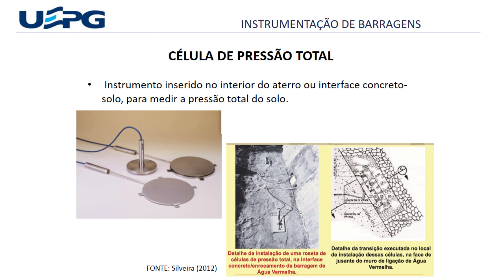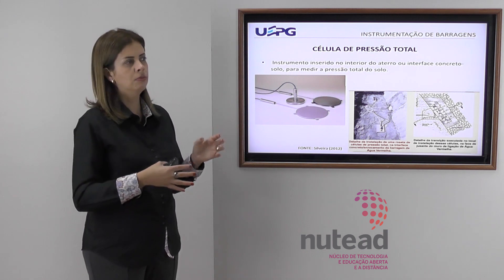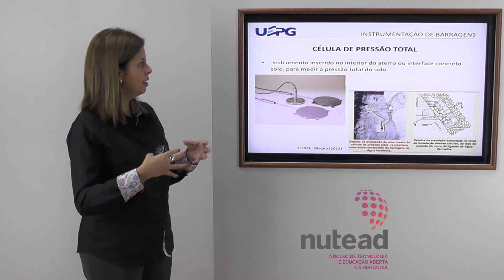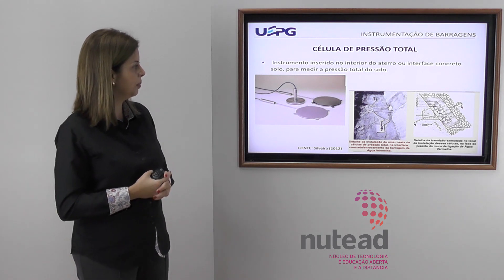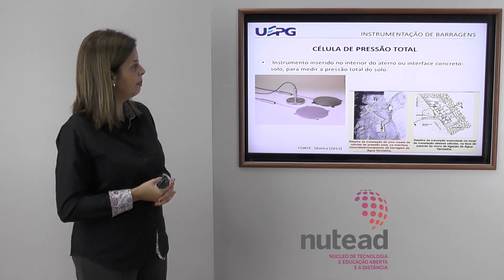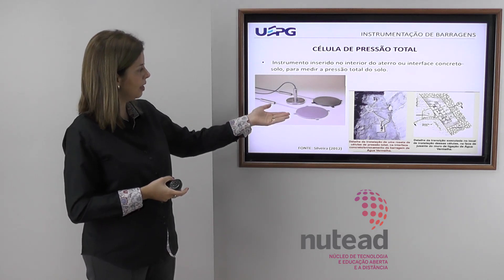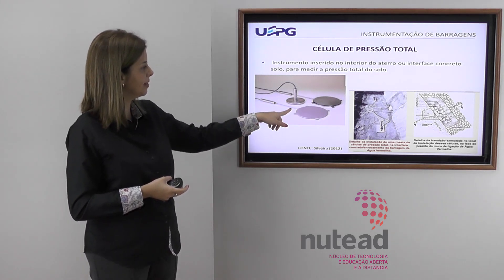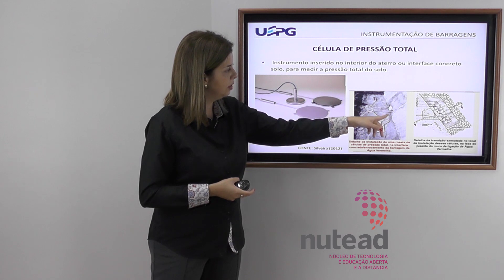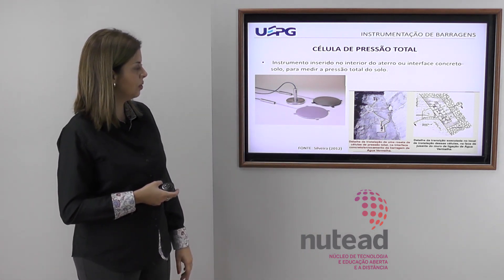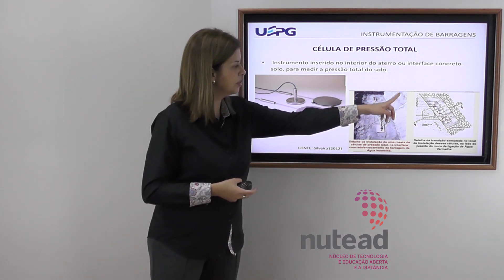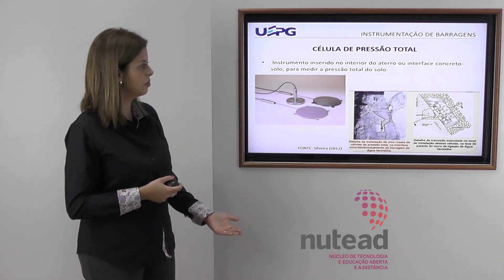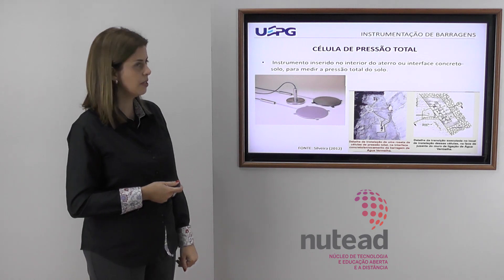As células de pressão total são utilizadas em barragens de aterro. São inseridas no interior do aterro ou em interface de concreto-solo, como vertedores, casas de força ou barragens de concreto encontrando barragens de solo, para medir a pressão total do solo. Aqui a gente vê um detalhe da execução das transições utilizadas para instalar essa célula de pressão total.